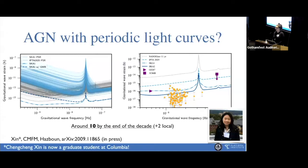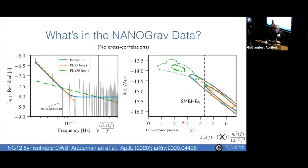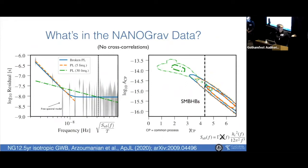Will you distinguish among those possibilities once the background is detected? The answer is in the spectral index. Supermassive black holes have the parameter gamma of 4.33; cosmic strings are at a different value, and primordial gravitational waves at yet another. Right now, everything looks similar — all numbers are really close to about four in parameter space. You have to nail down what the power law is, if it's even a power law, before we can say what's sourcing the background.